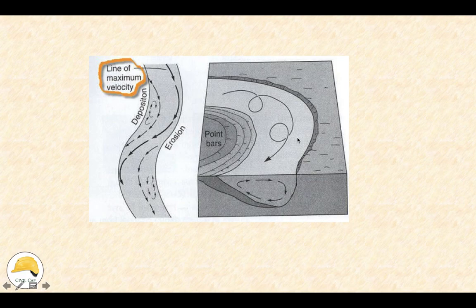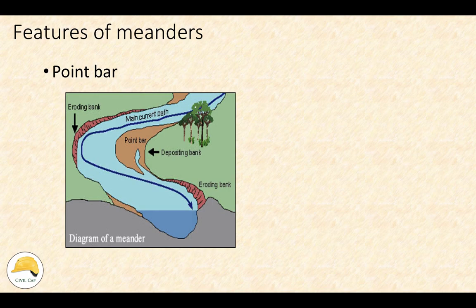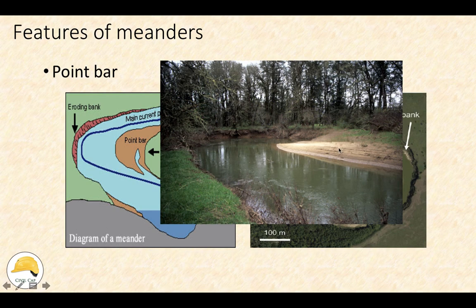This helical flow pattern moves from the concave side to the convex side, resulting in sedimentation. The two features of the meanders are a point bar and a cut bank. Sedimentation occurs on the convex side forming a point bar, while erosion on the concave side forms a cut bank.